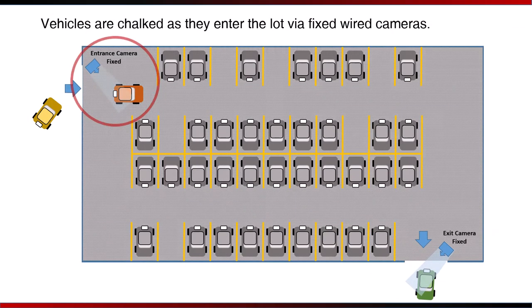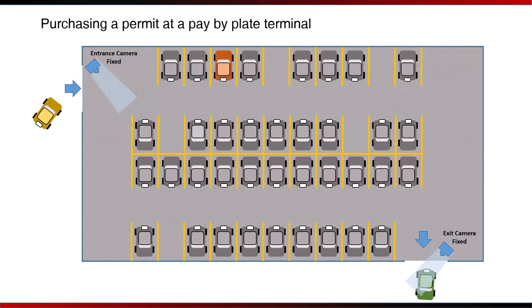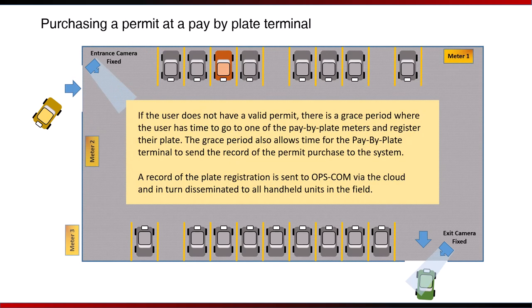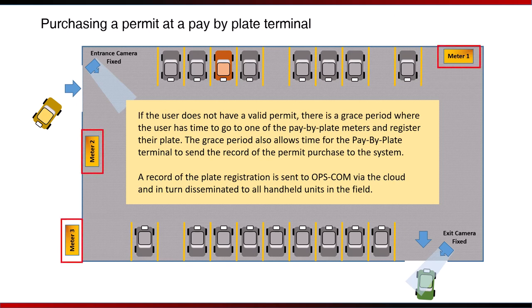Permit holders can go ahead and park at this point. If the user does not have a valid permit, there is a grace period where the user has time to go to one of the pay-by-plate meters and register their plate. The grace period also allows time for the pay-by-plate terminal to send the record of the purchase to the system. A record of the plate registration is sent to Opscom via the cloud and in turn disseminated to all handheld units in the field. Vehicles are also tracked as they exit the lot via fixed wired cameras.